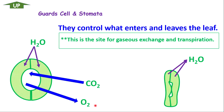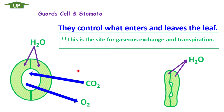However, if there is no light — for example during the night — then the gas movement will be reversed. During the night, the plant will respire more, so more oxygen will be going in and carbon dioxide will be coming out. So during the day this is the functional movement of the gases, but during the night it is reversed. Water vapor will also escape through the stomata.